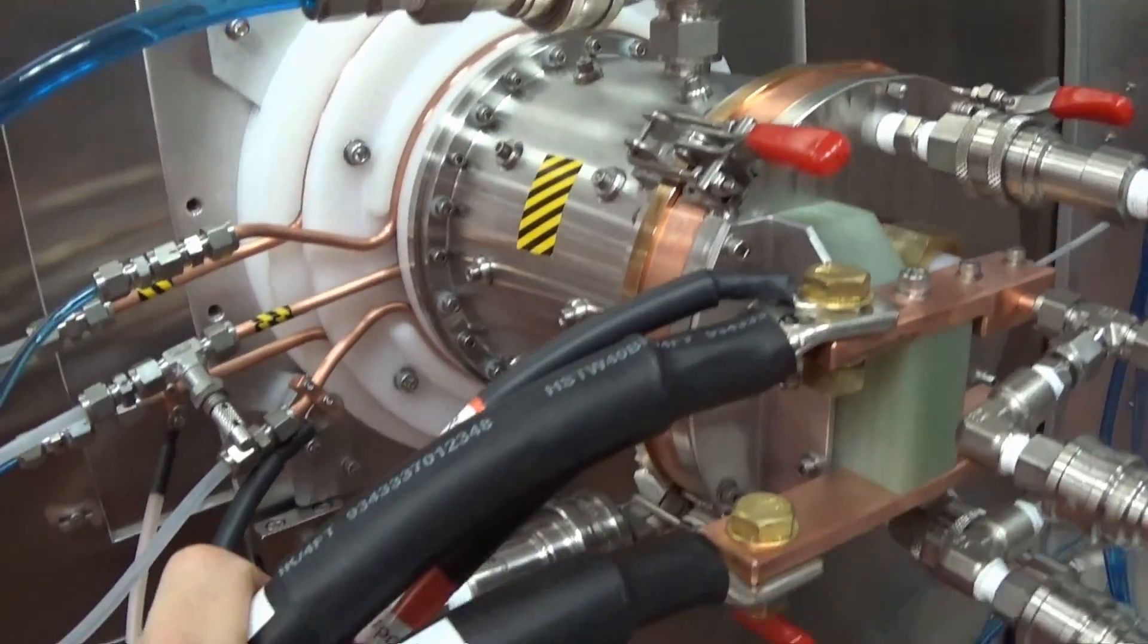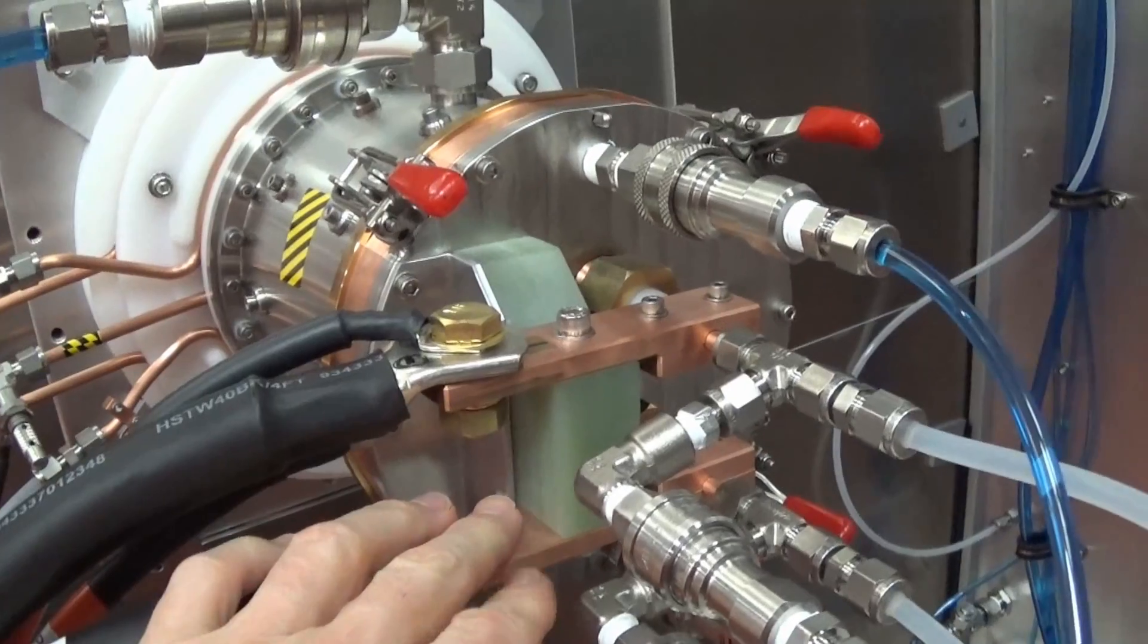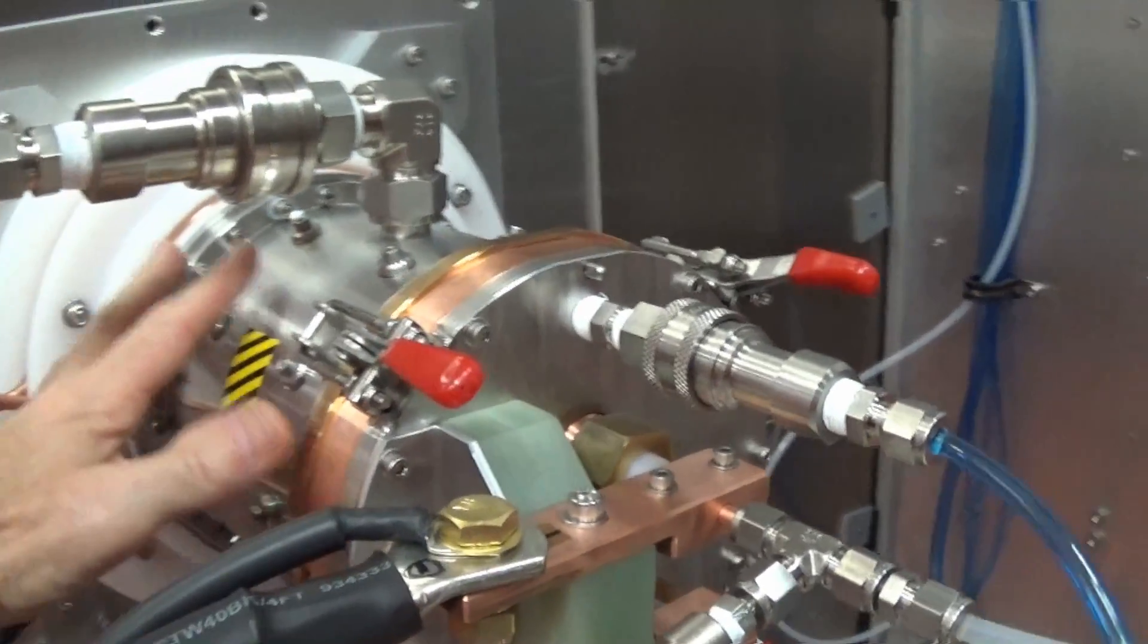These heavy cables here, they look like welding cables. They can carry up to 400 amps. And that's the amount of current required to light up the filament inside here. This is all in a vacuum.